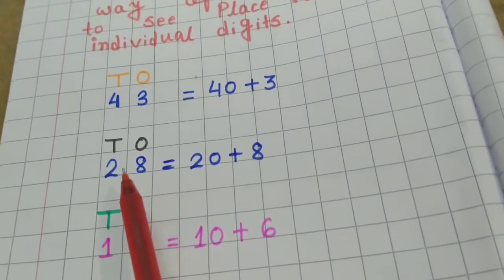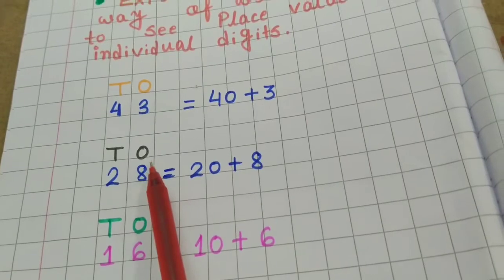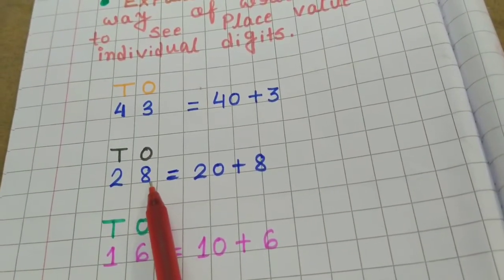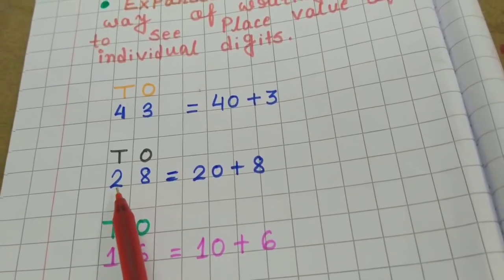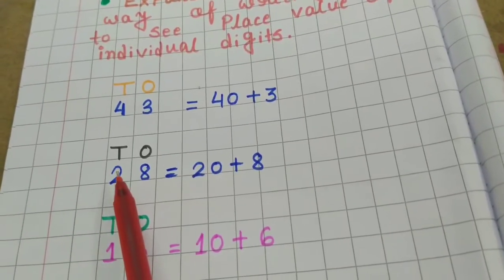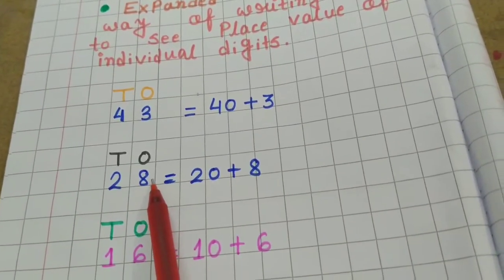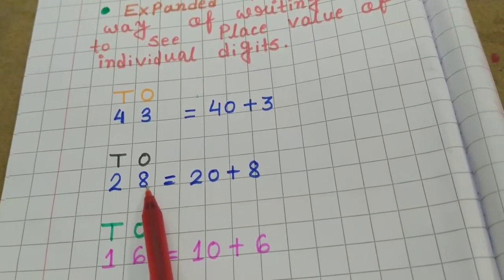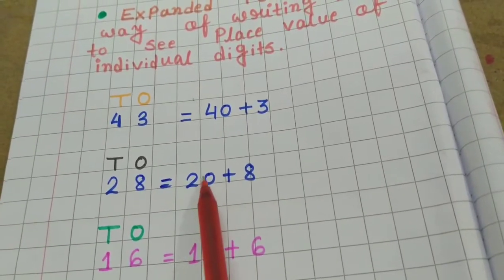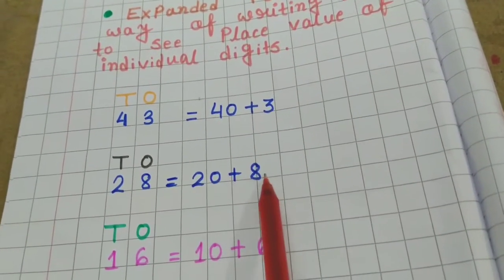Here also I have written 1s and 10s and under the 1s I have written 8 and under the 10s 2 means 28. So, 28, 20 plus 8.